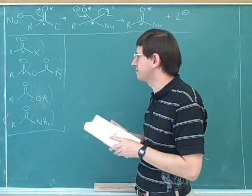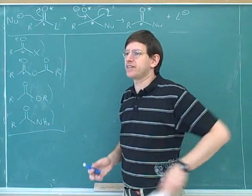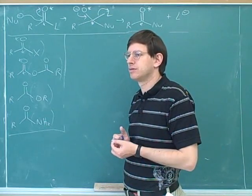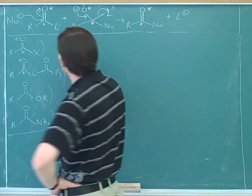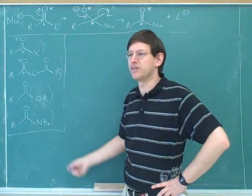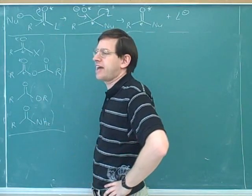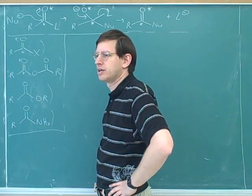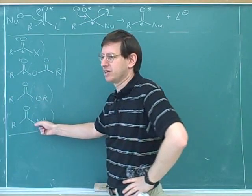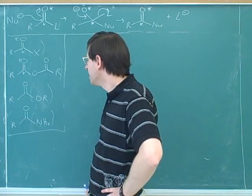Something else we have to talk about is reactivity. Do you remember which of these is the most reactive? The acyl halide — and these are listed in order of reactivity. Another way of putting it: which of these is the least happy? The acyl halide. And the amide is the most happy at the bottom. So is it easy to move up this chart or down the chart? Down the chart — you think of it as moving downhill. It's easy to go downhill, but hard to go uphill.